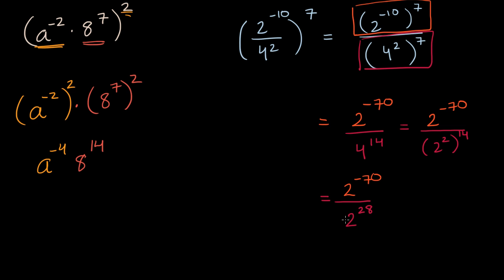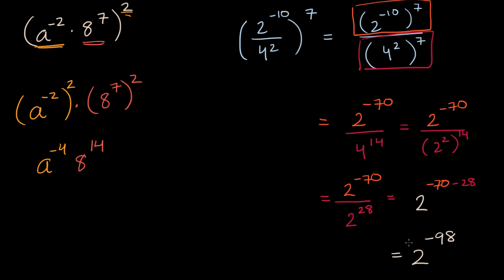Can I simplify this even more? This is going to be equal to two to the — if I'm taking a quotient with the same base, I can subtract the exponents. So it's going to be negative 70 minus twenty-eight, and so this is going to simplify to two to the negative ninety-eighth power. And that's another way of viewing the same expression.